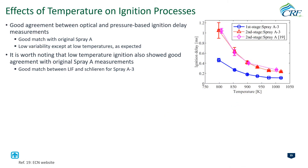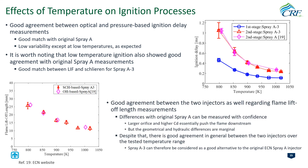This slide shows the effect of ambient temperature on the ignition process for both spray-A3 and spray-A injectors. Ignition delay times decrease with ambient temperature, and first-stage ignition delay times show less sensitivity to temperature than second-stage ignition delays. In general, there is good agreement between spray-A3 and spray-A injectors. Similarly, good agreement between the two injectors is observed for flame lift-off length, even though spray-A3 has a larger orifice and higher discharge coefficient.